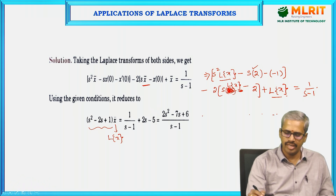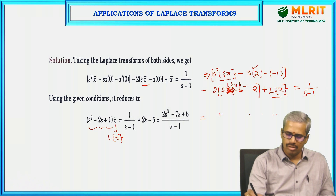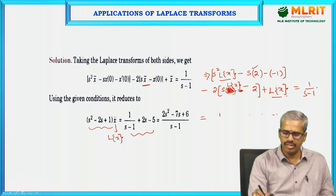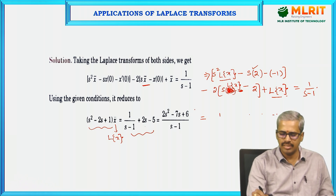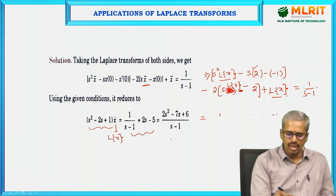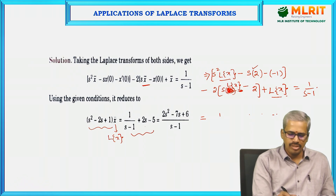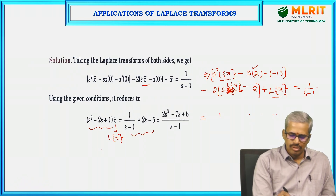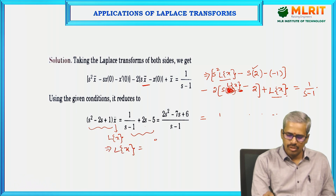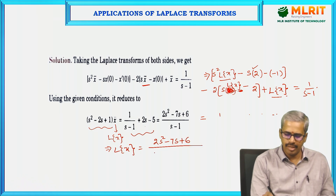Taking the right-hand side terms together: 1/(s − 1) plus 2s minus 5. Taking the LCM gives (2s² minus 7s plus 6)/(s − 1). So L{x} equals (2s² minus 7s plus 6) divided by (s − 1)·(s² minus 2s plus 1).